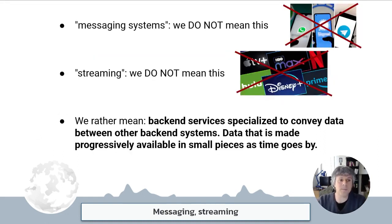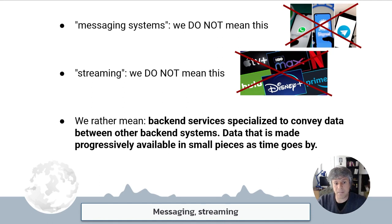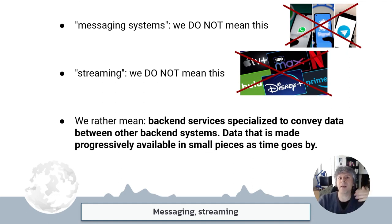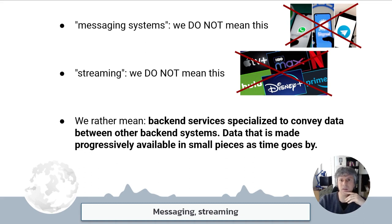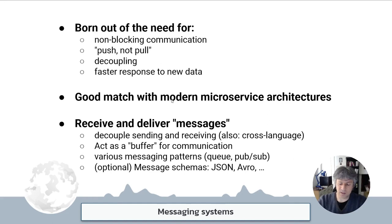Before we go on: when I say messaging platform or messaging system, I do not mean sending SMS through your cell phone. And when I say streaming, I do not mean sitting on your couch watching a film. A messaging platform is basically a back-end service able to route and convey data between back-end systems. This kind of data is usually available progressively — as it comes available, it is relayed through these messaging systems — usually coming in small packets of information which we call events.